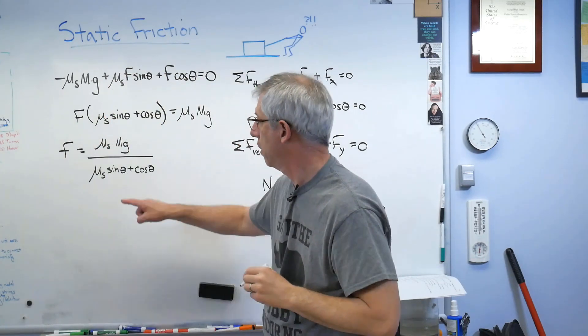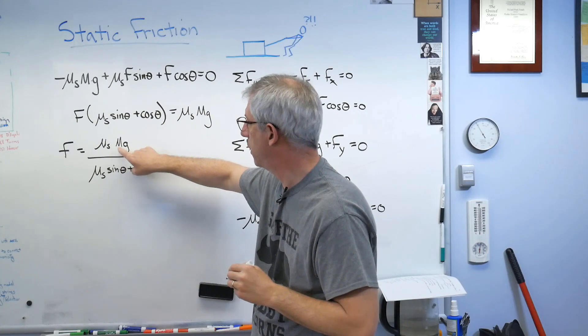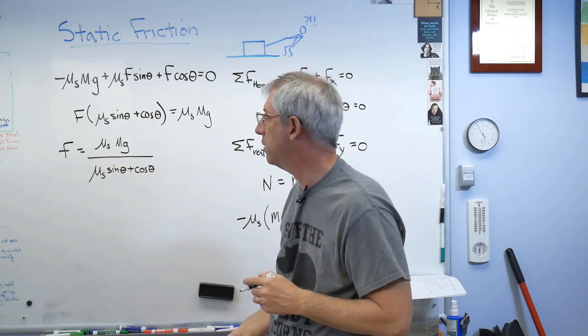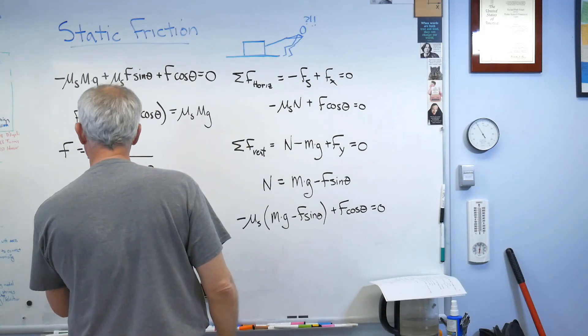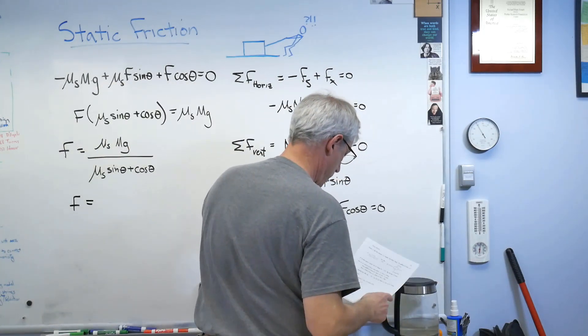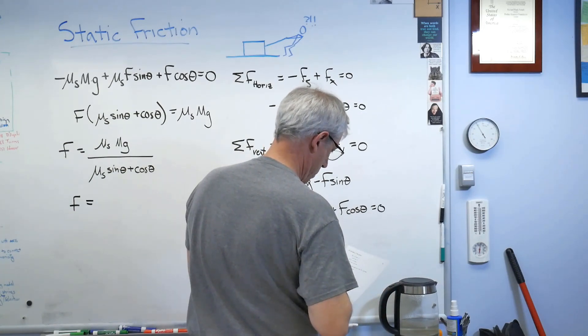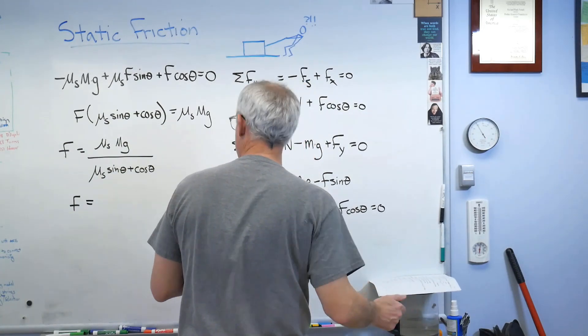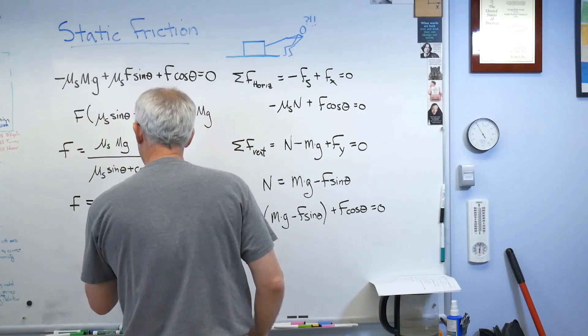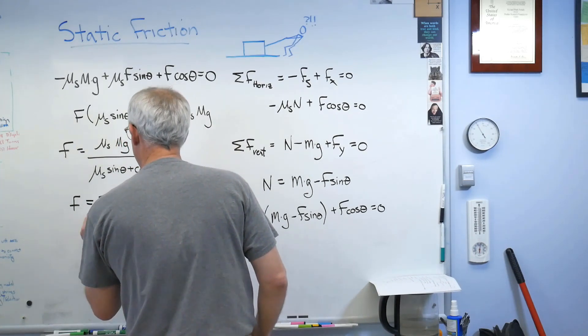Okay, there we are. This is a half. That's 500. That's 9.81. Sine 20 degrees, cosine 20 degrees. When you work all that out, what you find out is f is 2208.06 newtons.